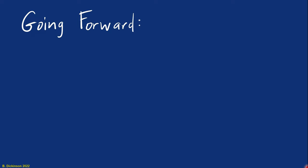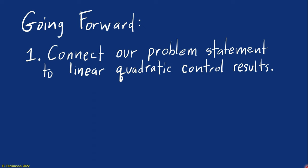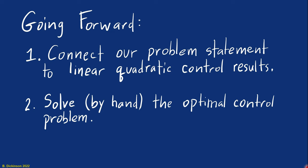Now, going forward, what will we do? We're going to connect our problem statement to existing theory and optimal control, specifically linear quadratic theory. We're then going to solve the optimal control problem. And while we can do it on the computer, we're actually going to solve this by hand. And in doing so, it's going to exercise our creativity and ingenuity in problem solving. And from that closed form solution, we can actually obtain different types of guidance laws, one of them being proportional navigation.